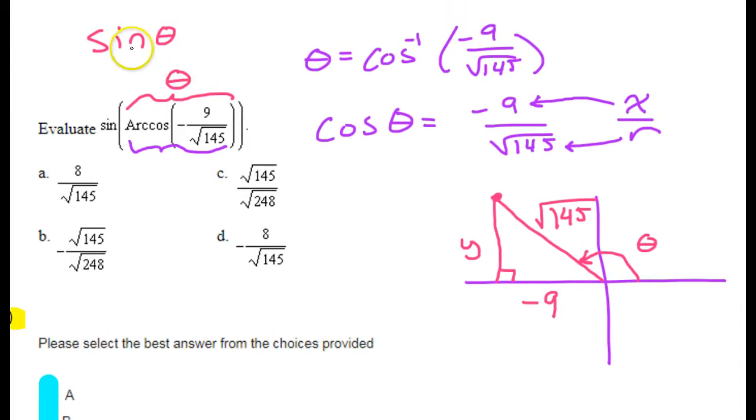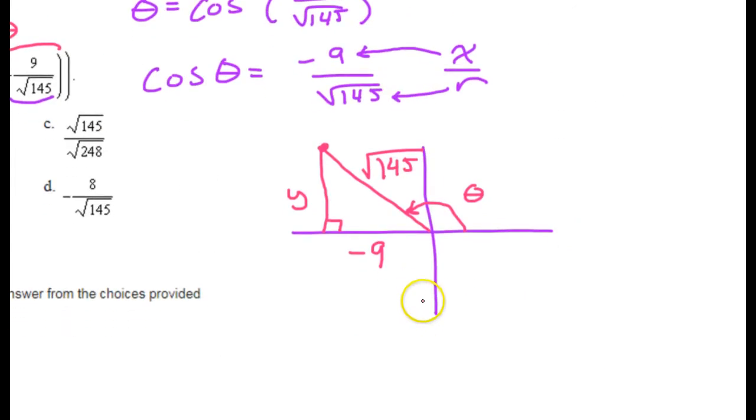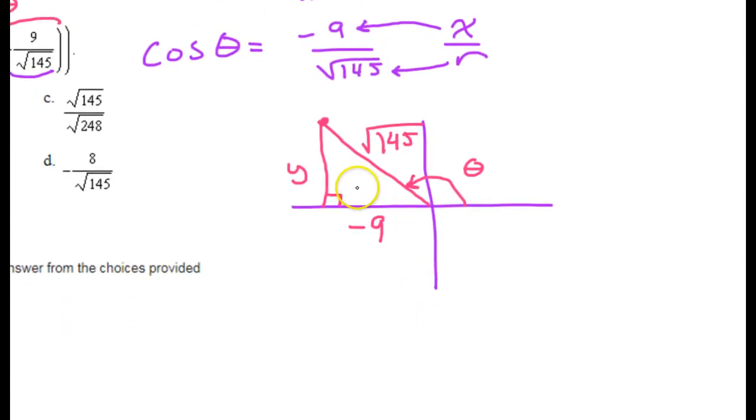But eventually we need to find sine theta. We need to find the sine of this angle. And sine is y over r. So we need to know what y is. So looking at this picture, how do I find y? I can just use the Pythagorean theorem. A squared plus b squared equals c squared.